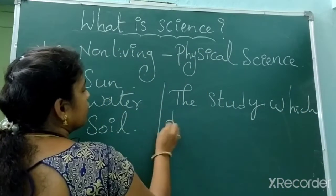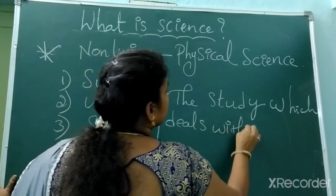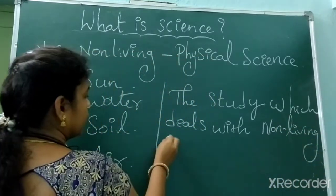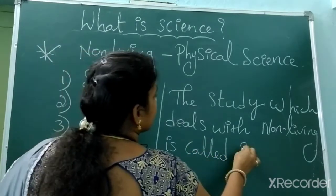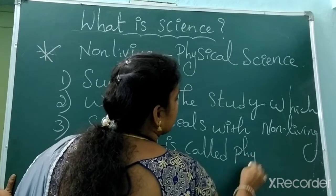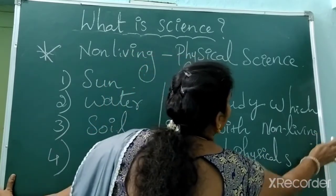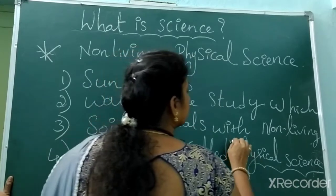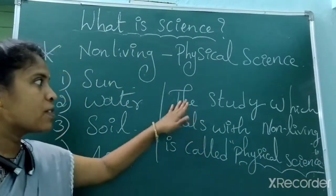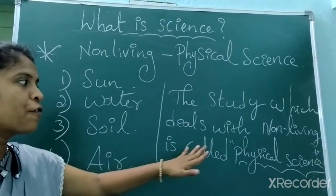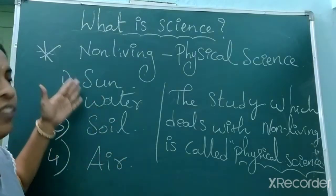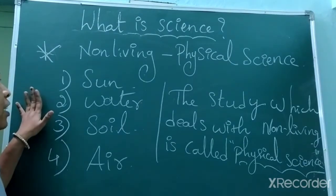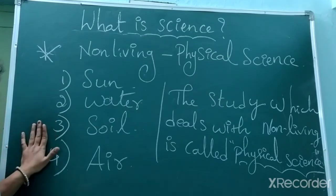The study which deals with non-living things is called physical science. Now we also have to look at living things. If a living thing needs to survive on the earth, compulsorily they need sunlight, water, soil, and air.